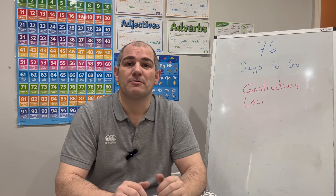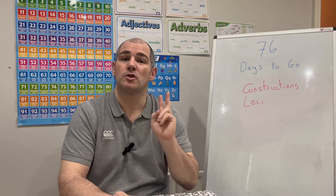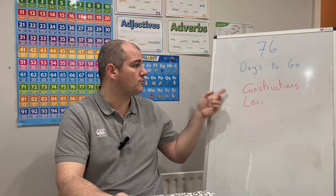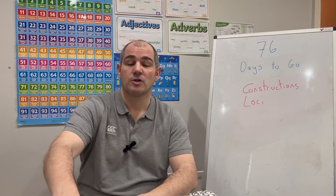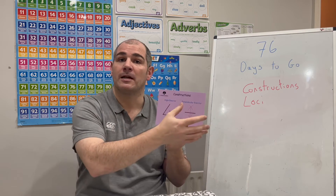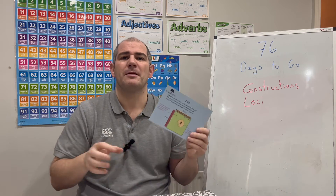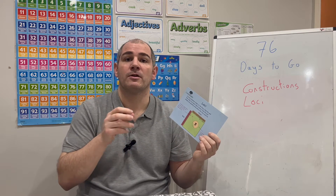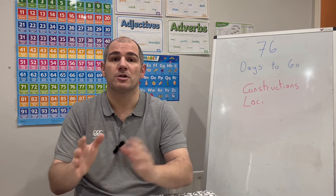Hi everyone, welcome to this GCSE Foundation Revision video. There's 76 days to go until your GCSE Maths exam and today we're going to focus on two topics: constructions and loci. They're kind of linked together. Constructions include things such as your angle bisector and perpendicular bisector. Loci is when you're given a situation and you've got to find a suitable region or position which might satisfy certain rules.